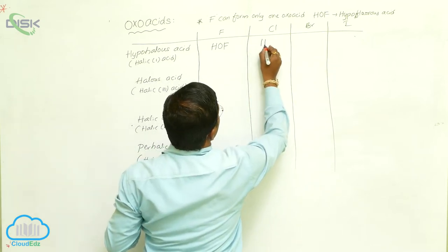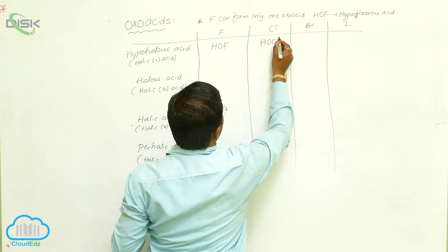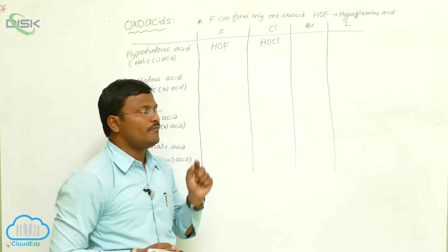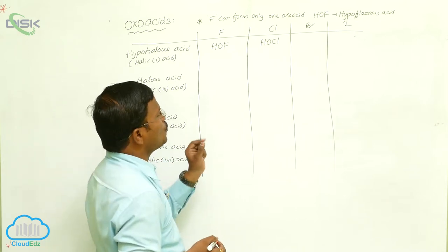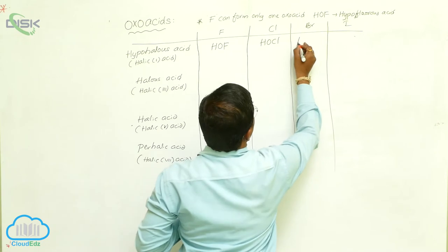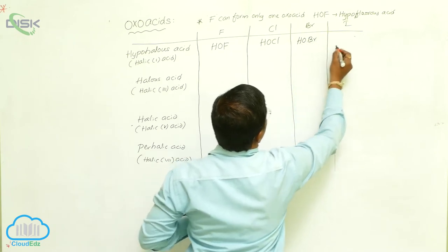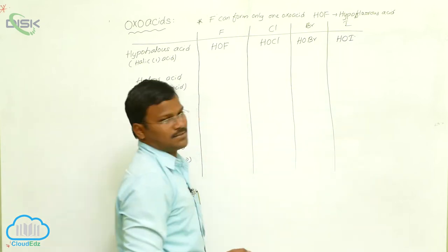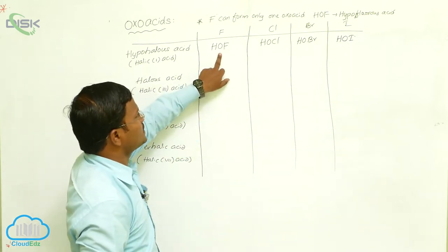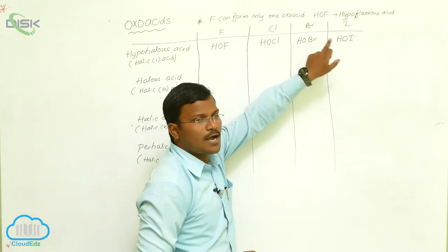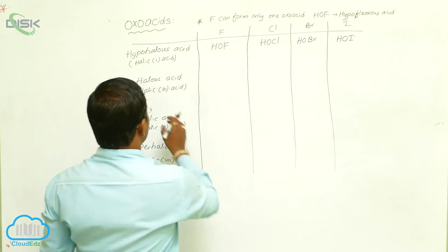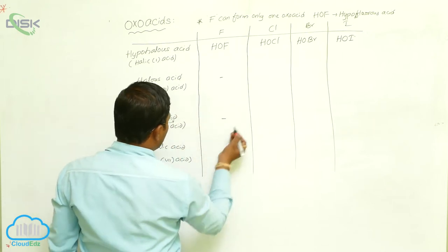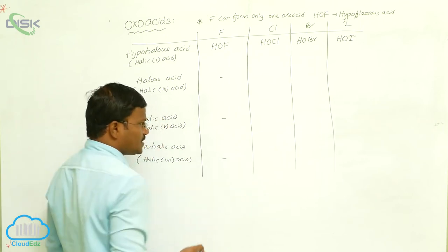Chlorine produces a hypohalous acid HOCl (hypochlorous acid); bromine produces HOBr (hypobromous acid); and iodine produces HOI (hypoiodous acid). Fluorine cannot form halic-3, halic-5, or halic-7 acids.